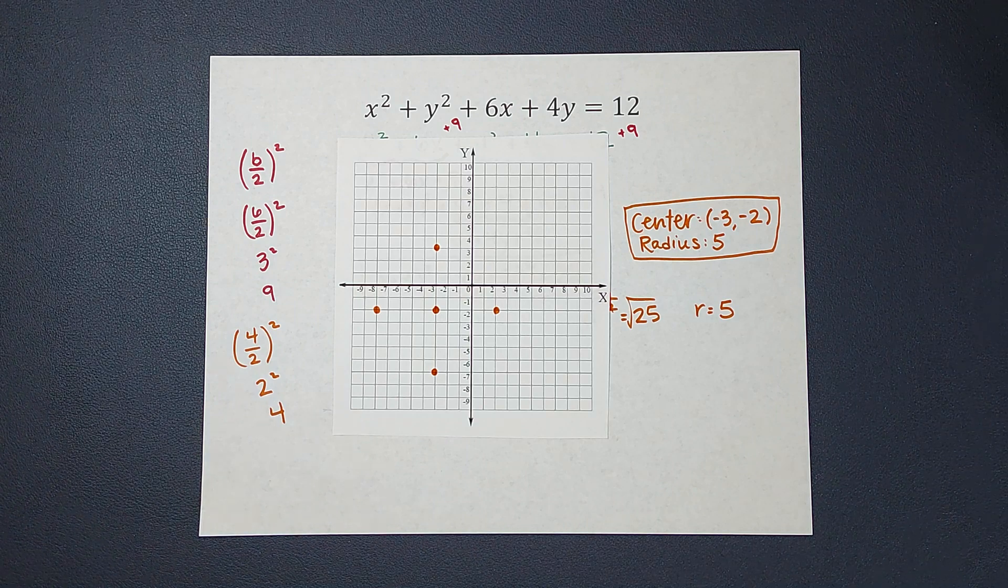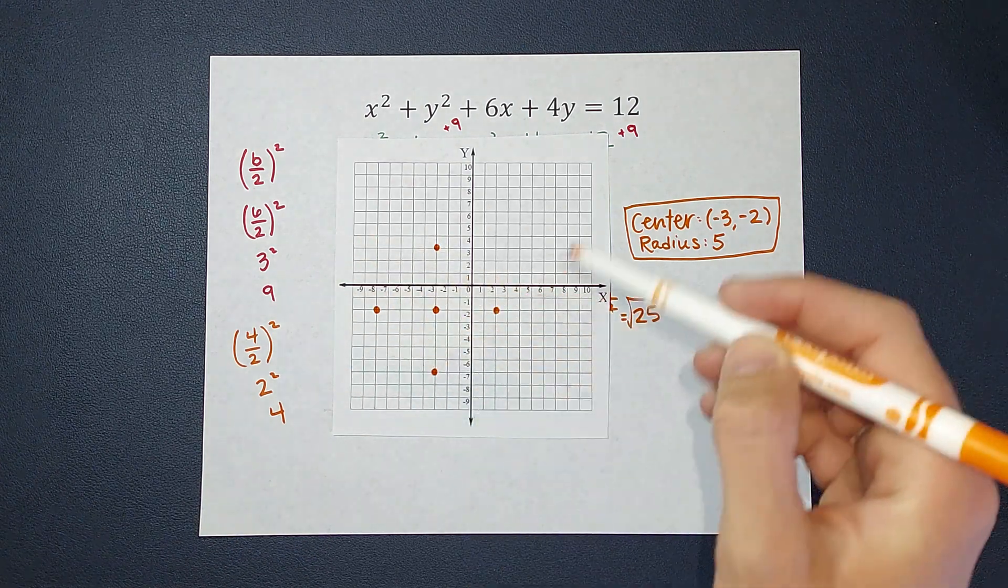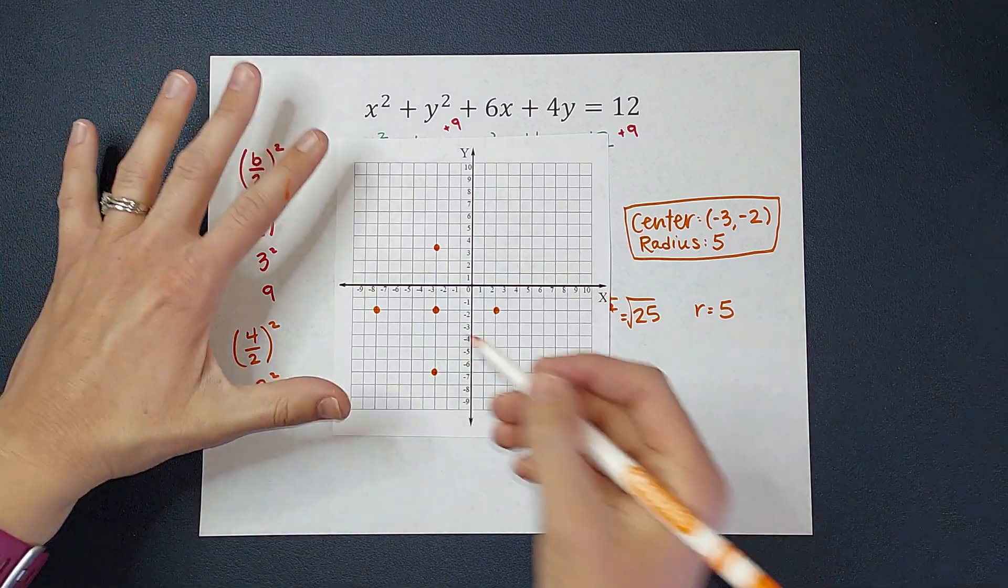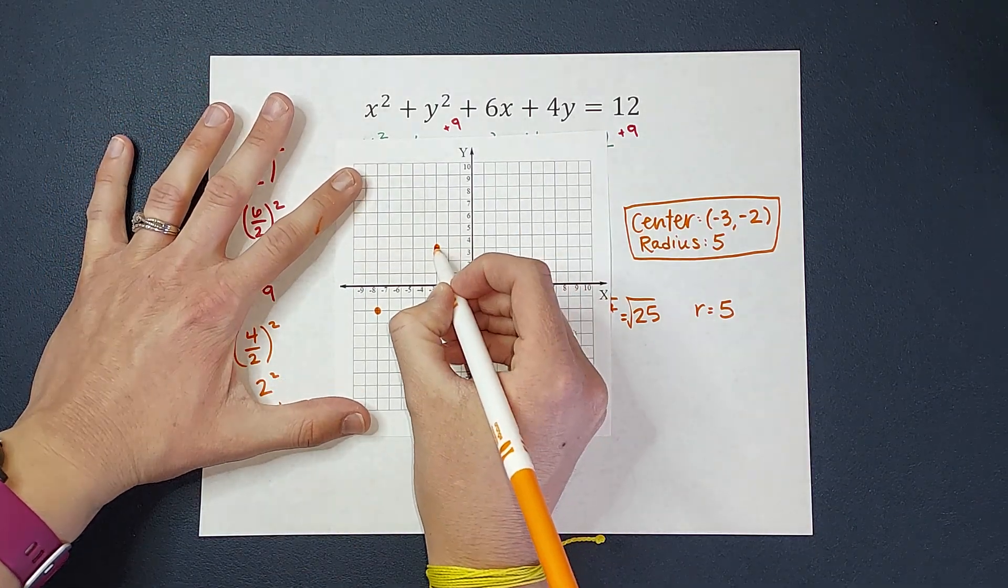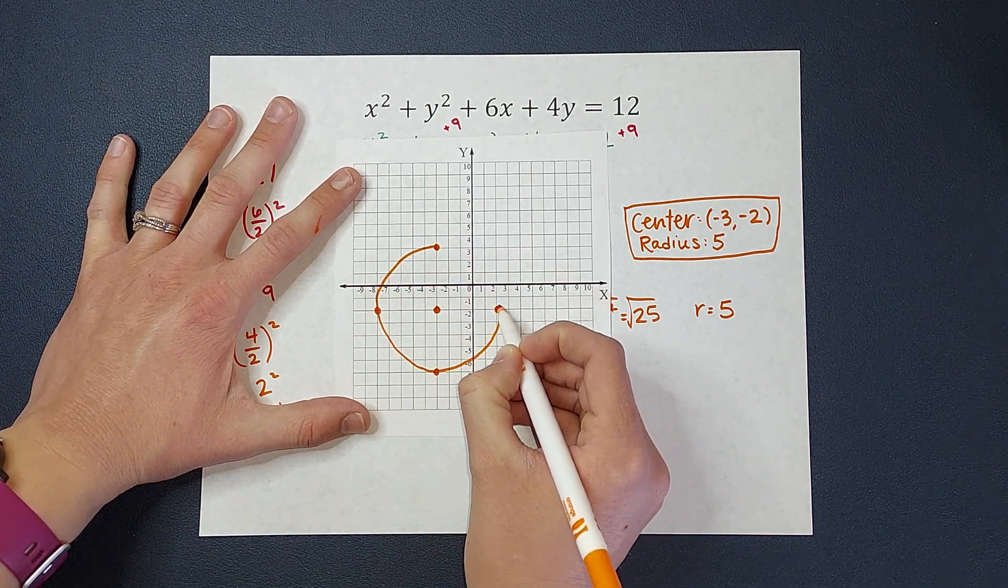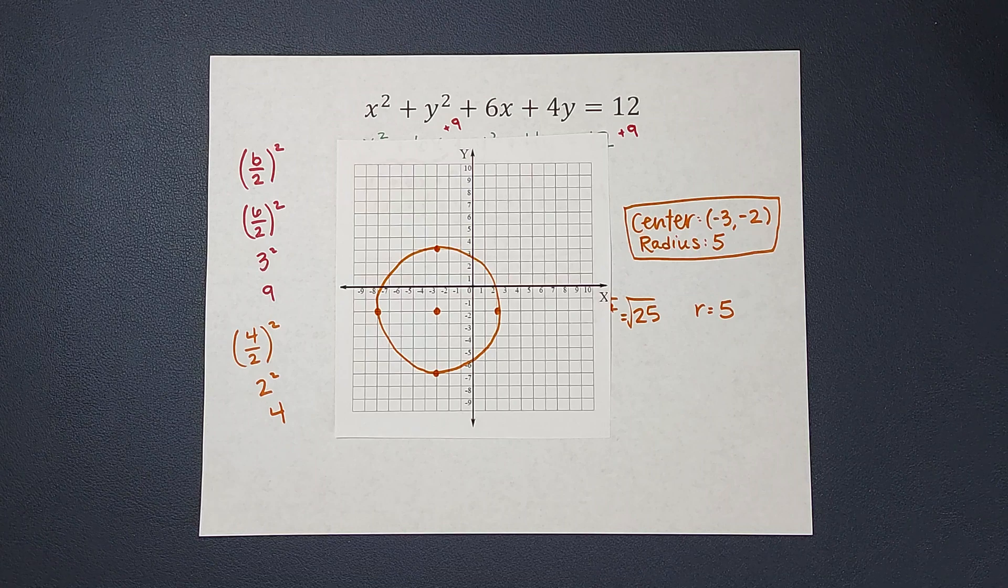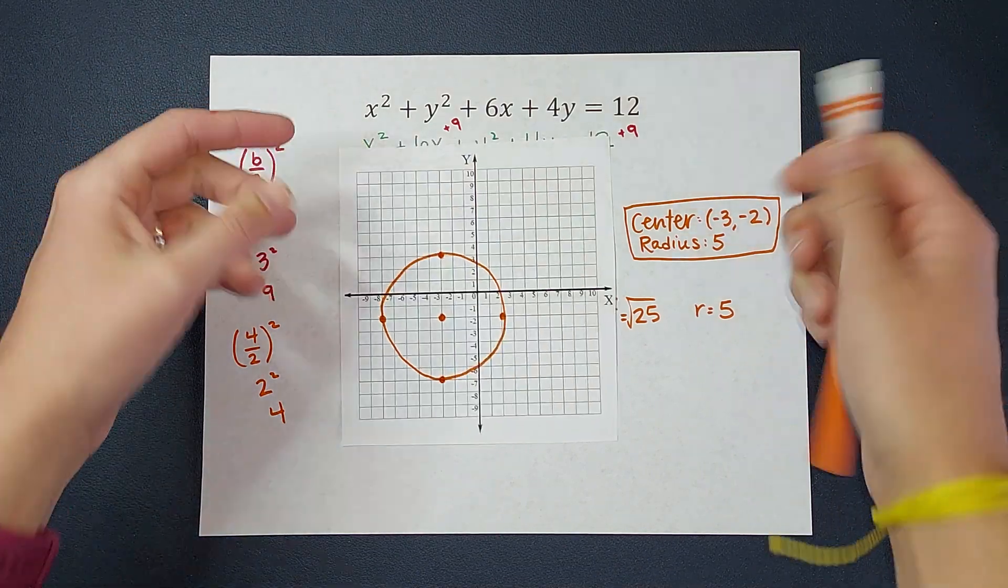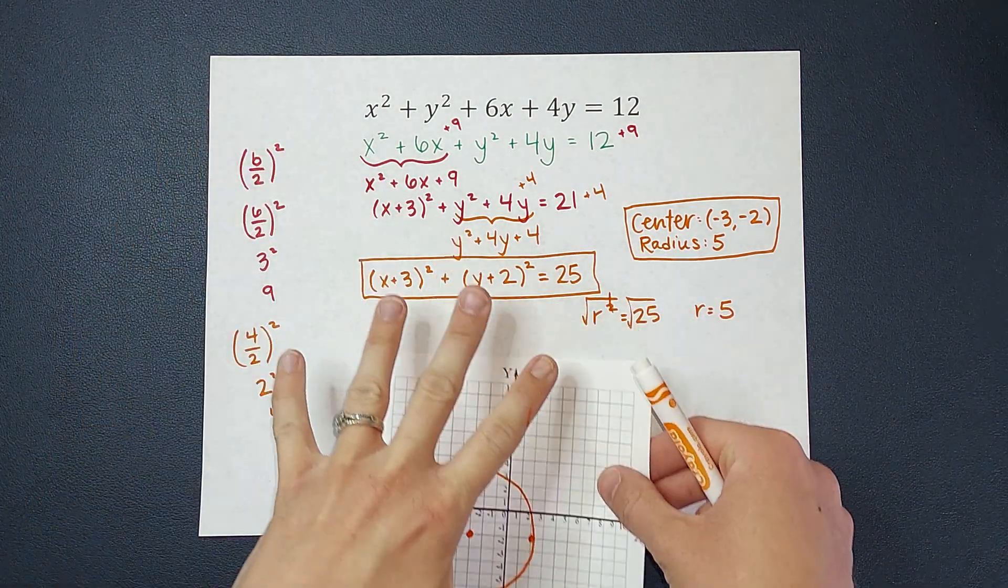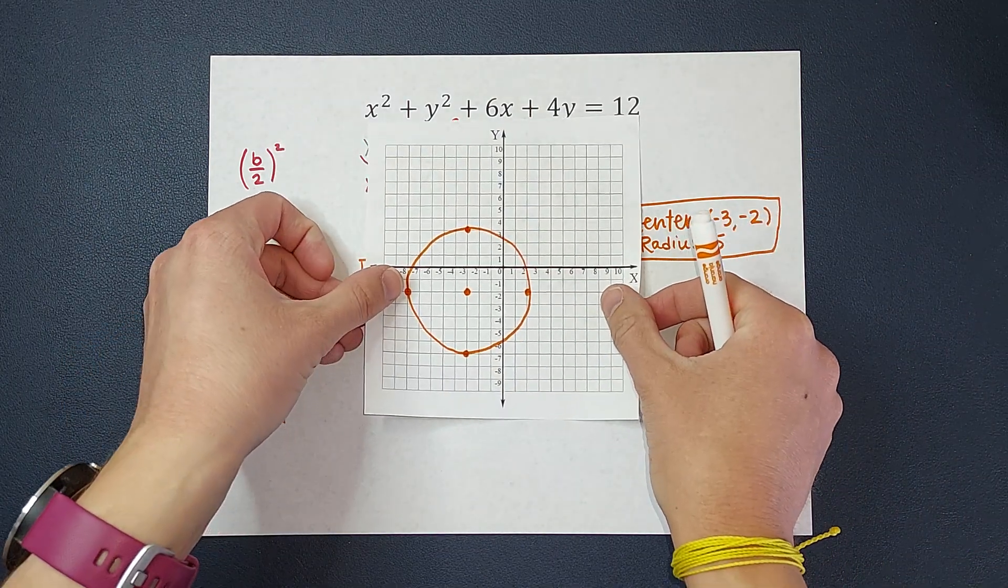Now, just like when we graph a line, you don't graph every point on the line. That would literally take forever. So we don't have to graph every point on this circle. Having 4 is a pretty good indication of what this circle looks like. So my circle is not going to be perfect, I guarantee that, but it's going to look a little something like that. Okay guys, we did it. We started with an equation that was not in standard form. We used, or we completed the square twice to get it to standard form. Once we did that, it was easy to find our center and radius, and then we were able to graph it.